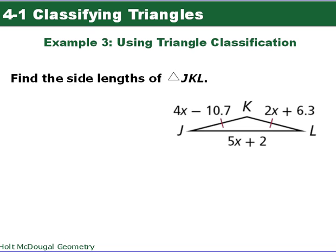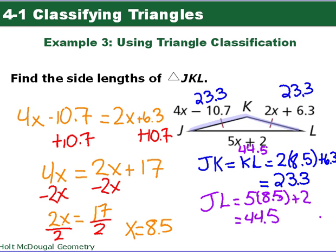Alright, so you are going to classify this triangle by its side lengths. Okay, now we're going to be using triangle classifications to find the side lengths. In this triangle, we have an isosceles triangle because we have those two sides are congruent. Segment JK is congruent to segment KL. So we can now write an equation and solve for x. Okay, so given our isosceles triangle, we know that JK is equal to KL. So this was our JK equals KL. Solving for x, getting x all by itself, we get x to equal 8.5. Now, we had to find the side lengths. So you have to go back and substitute 8.5 in for our original expressions up there. These two sides are the same length. So 2 times 8.5 plus 6.3 is 23.3 for JK and KL. And JL is 5 times 8.5 plus 2 or 44.5.